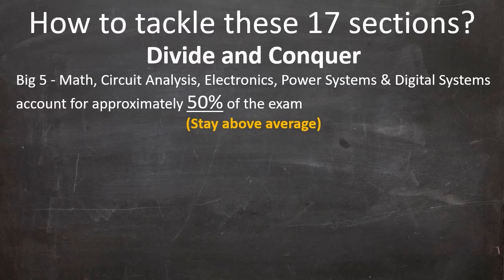The first sub-mission is the Big Five. I call these sections the Big Five — they include math, circuit analysis, electronics, power systems, and digital systems — because they account for approximately 50% of the exam. These are some of the most heavily weighted topics, so your first sub-mission is to stay above average in all five. Because if you have a poor showing in any one of them, it can really hamper your chances of passing the exam.